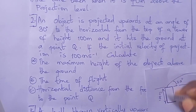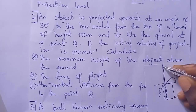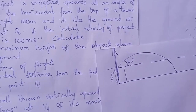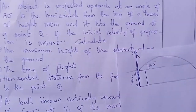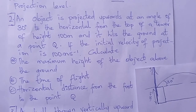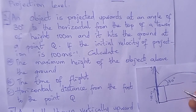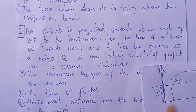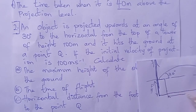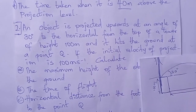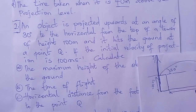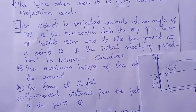Remember that projectile motion always has a vertical and horizontal component. This is the X axis and this is the Y axis. The ground is at point Q. They're asking us to find the time of flight, which is the time to cover the range — that is, the total horizontal displacement.